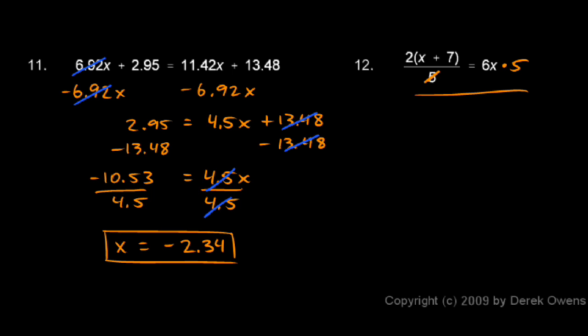That leaves us with 2x + 7 on the left and 30x on the right. So I have 2 times (x + 7) = 30x. Now let's distribute the 2. That will give me 2x + 14 = 30x.